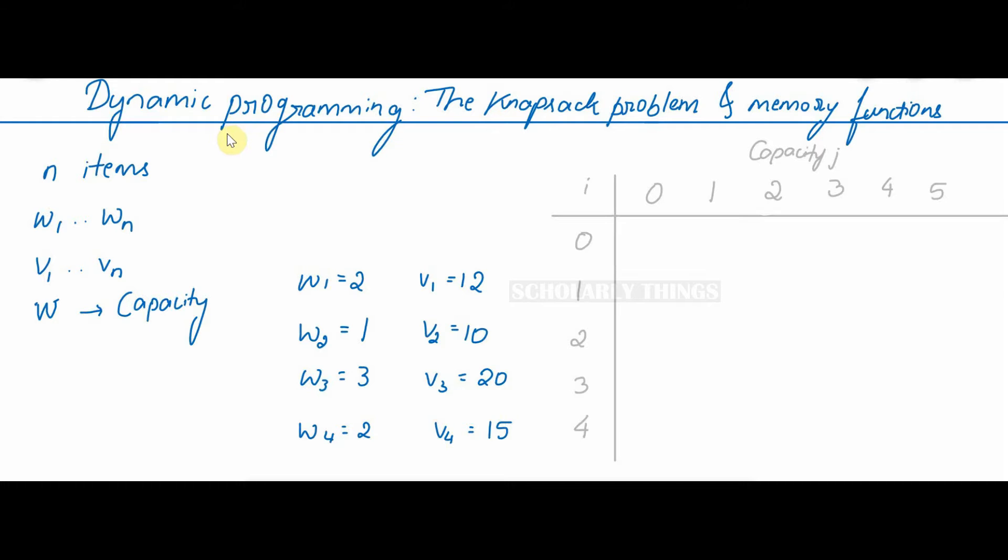Knapsack problem. Given N items with weights W1 to Wn, values V1 to Vn, and the knapsack capacity of W, we have to find the most valuable subset of the items that fit into the knapsack. We have to fill the objects or items in bag such that the total value is maximized. Let us consider this example. There are four items. These are the weights of those four items and these are the values. The capacity of the bag is 5.